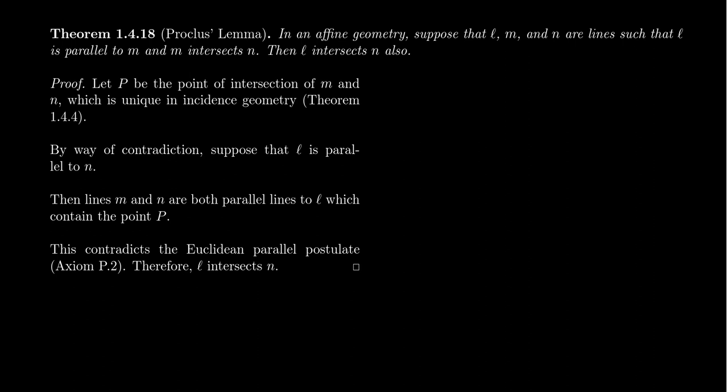Affine geometry is a very important and broad setting. After all, Euclidean geometry, R², is an affine geometry. Clearly there's more structure to Euclidean geometry than just the affine structure of incidence and parallelism, but it's very important when we study Euclidean geometry that we understand its affine structure.